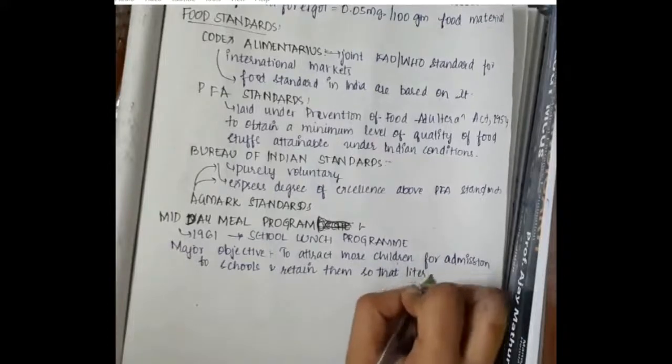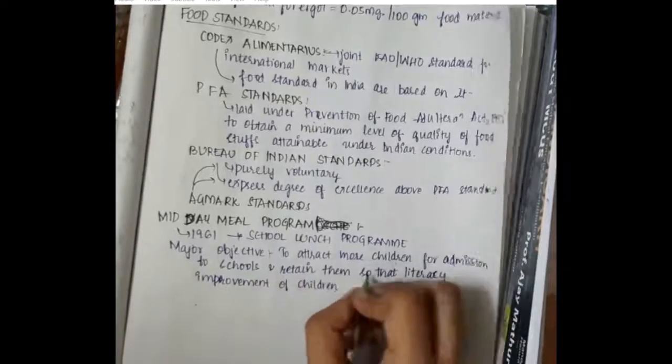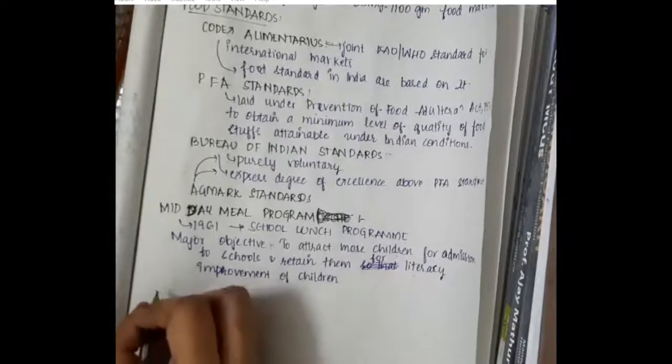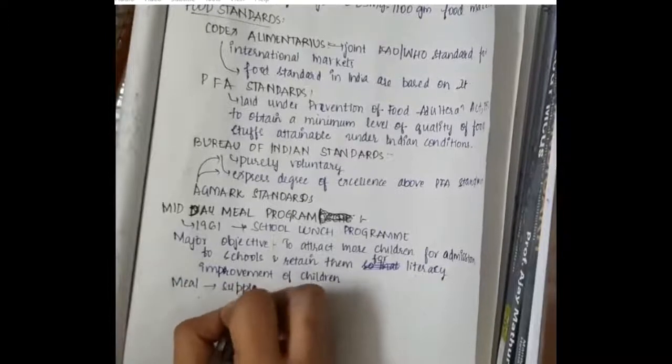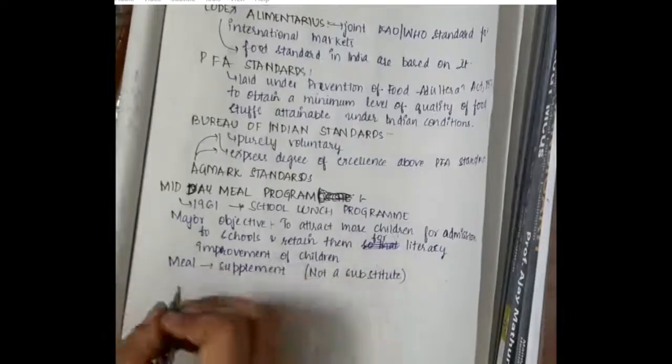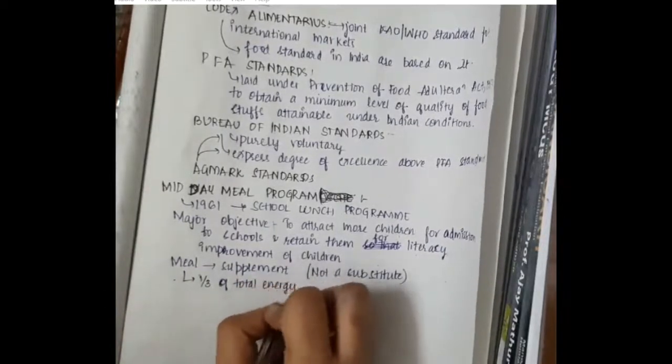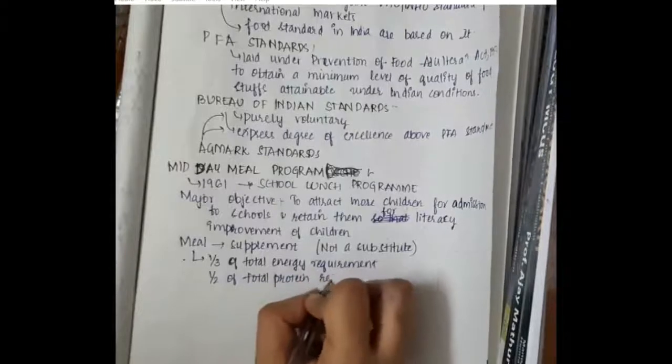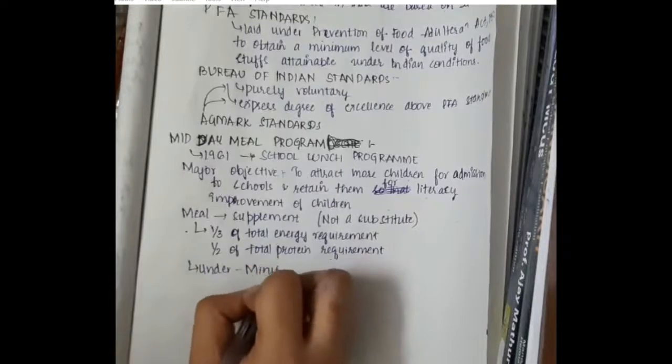The main aim is that the children will at least come to the schools for proper food, especially from below socioeconomic status families. In this Midday Meal Program, the meal provided is a supplement but not a substitute. It is supplementary. This meal constitutes one-third of total energy requirement and half of total protein requirement.